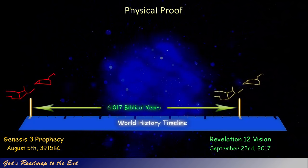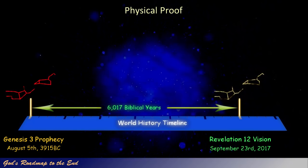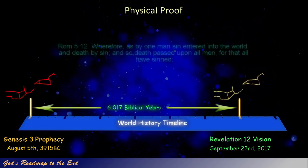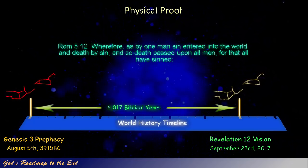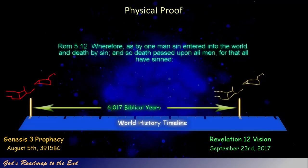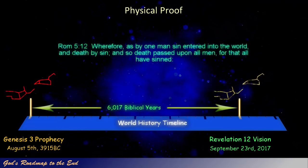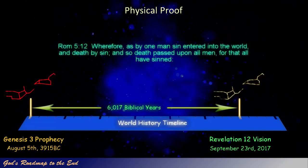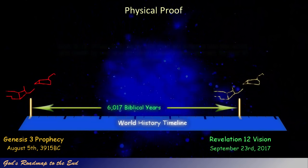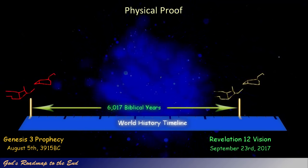We know that at the point that the prophecy was given, sin entered the world and death by sin, as seen in Romans 5. Romans 5 verse 12: 'Wherefore, as by one man sin entered into the world, and death by sin, and so death passed upon all men, for that all have sinned.' Before this point, there was no death, according to God's word.